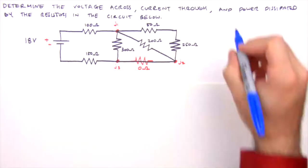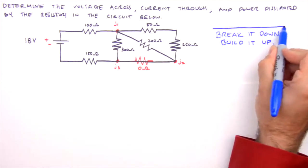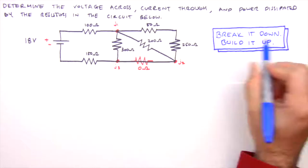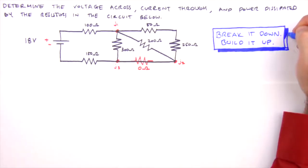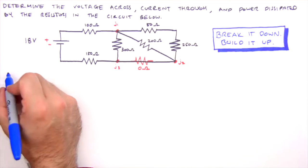Alright, to analyze a combination circuit, we'll use what I call the break it down, build it up method. We'll break the circuit down piece by piece, determining equivalent resistances until we have a single equivalent resistance for the entire circuit. Then, we'll build it back up piece by piece using Ohm's law, until the voltage across and current through each resistor has been determined.